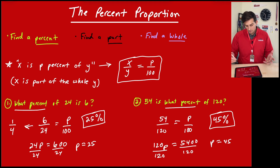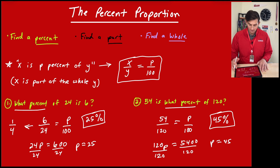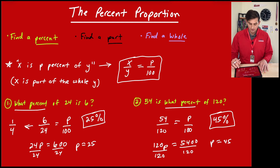For this one the numbers are a little larger, so it might be harder to reduce off the bat. Going from 120 to 100 isn't immediately obvious. Cross multiplying is probably your easiest approach, especially if you have a calculator available. Those are the first two examples where we find the percent.